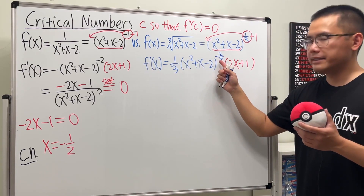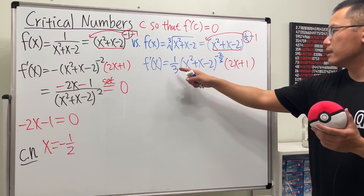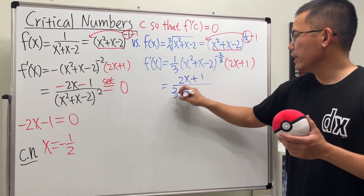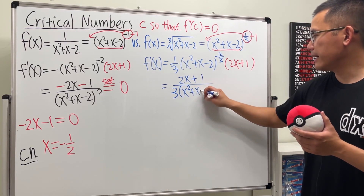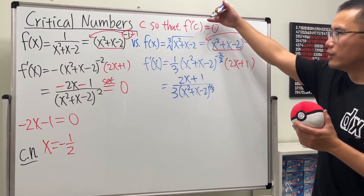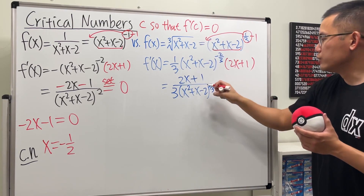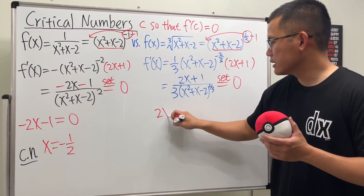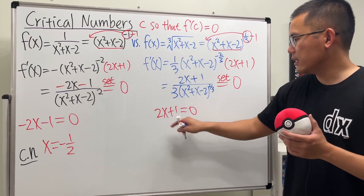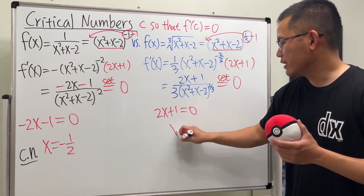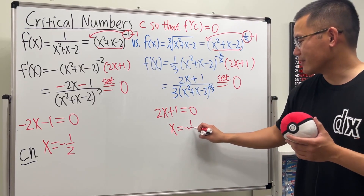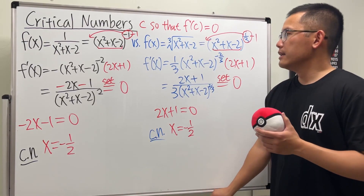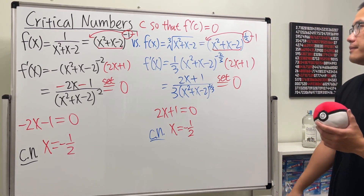Bringing the negative exponent down to the denominator, we get (2x + 1) over 3 times (x² + x - 2) to the 2/3 power. To find c where the derivative equals zero, we set the numerator 2x + 1 equal to zero, giving x = negative 1/2 — the same answer as before. So negative 1/2 is a critical number for this function as well.